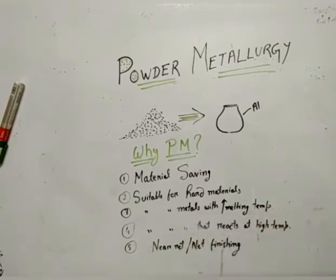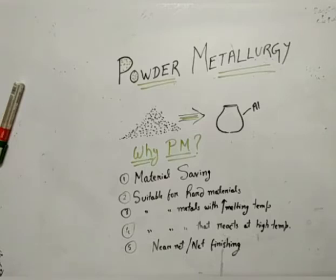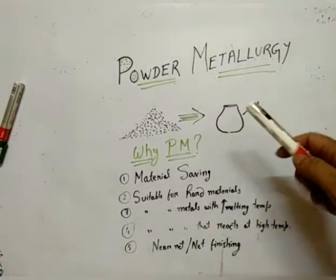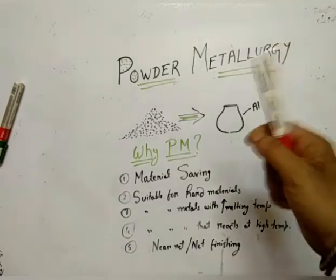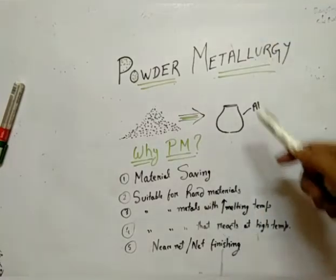The third reason is metals with high melting temperatures. If you take the example of tungsten, platinum, or uranium, these metals melt at very high temperatures — for example, tungsten melts at around 3400 degrees centigrade. It is not economical to melt these metals, as a lot of energy is consumed in furnaces. To reduce cost, you can create metallic powders of tungsten and then fabricate your part using powder metallurgy.